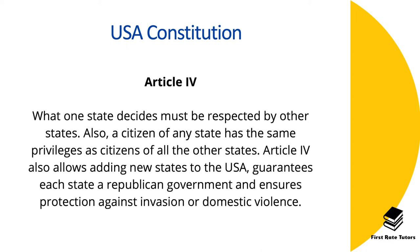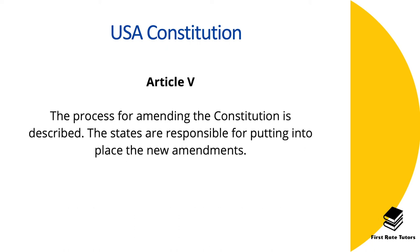Article 4 outlines what one state decides must be respected by other states. A citizen of any state has the same privileges as citizens of all other states. Article 4 also allows adding new states to the USA, guarantees each state a republican form of government, and ensures protection against invasion or domestic violence. Article 5 outlines the process for amending the constitution, and all states are responsible for putting new amendments into place.